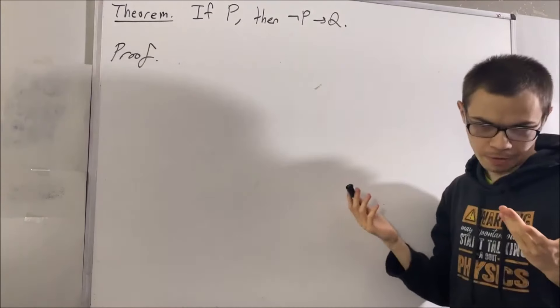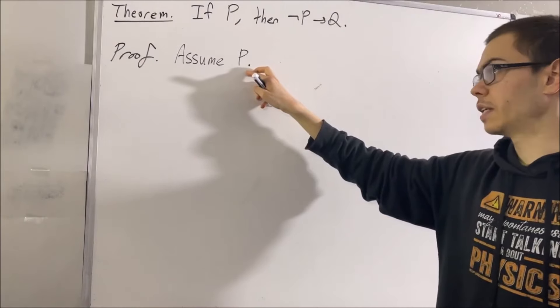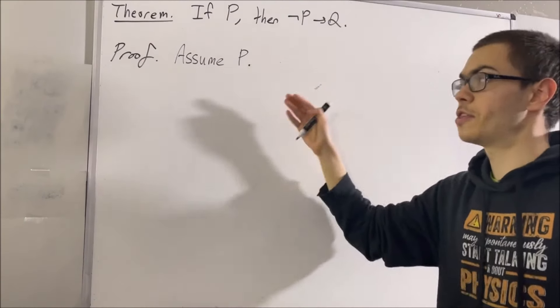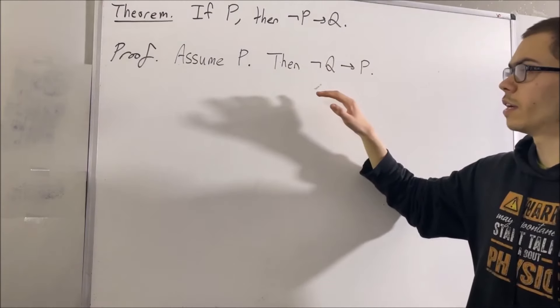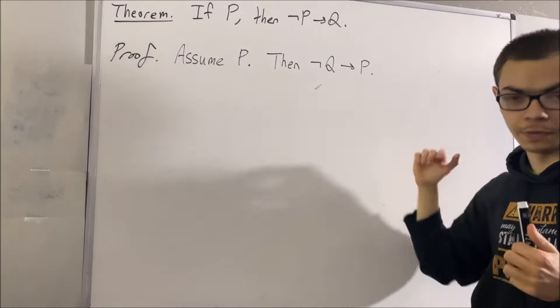And it kind of makes sense. Because if P is true, then in any situation where P is false, Q will be true. We're never going to have a situation where P is false, so of course Q will be true in that case.